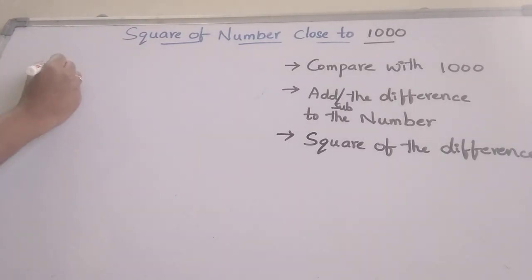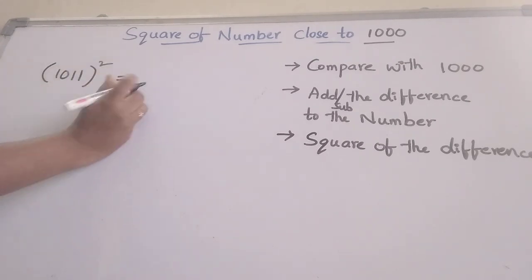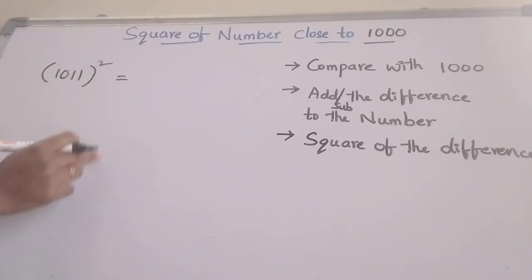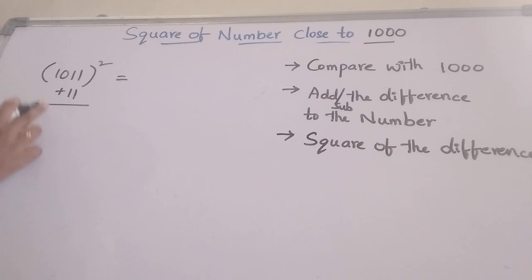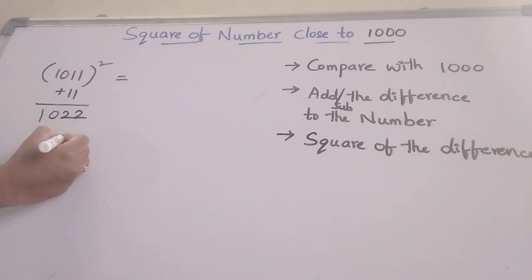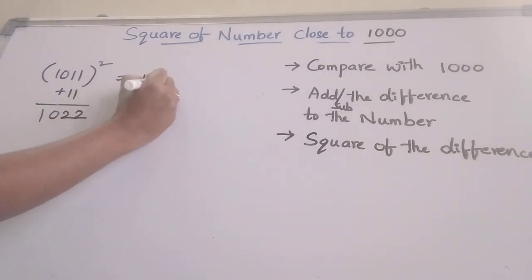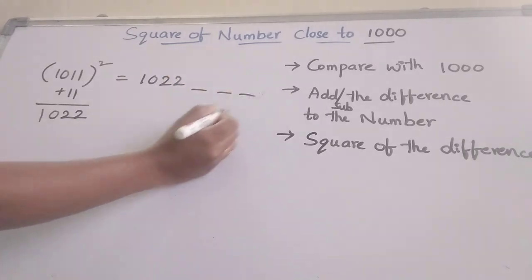Finding the square of 1011. First, compare with 1000 and see the difference. The difference is plus 11. We can add this 11 to this number — it should be 1022. Write 1022 here and take 3 blanks.